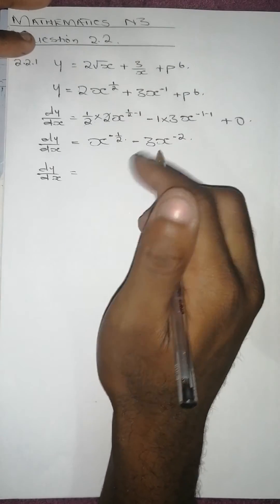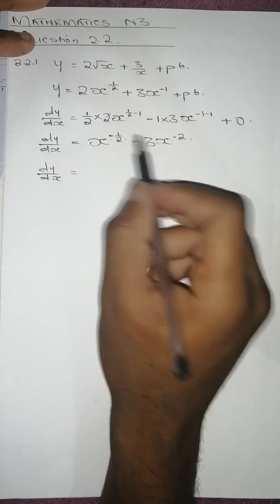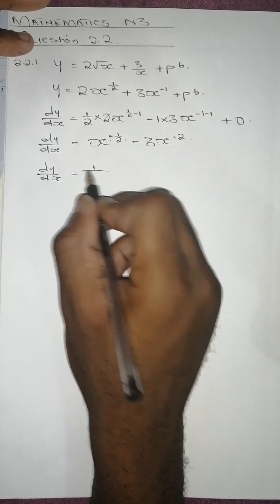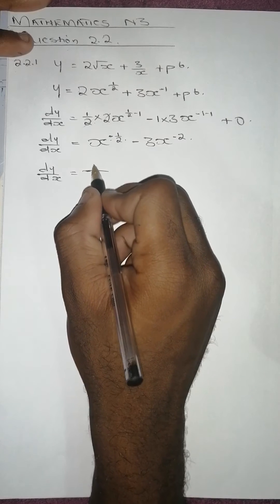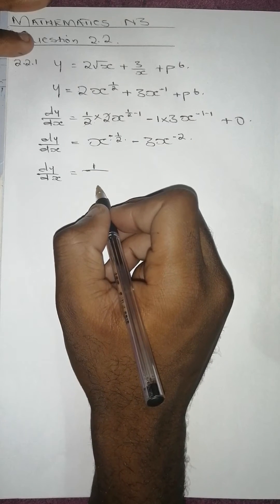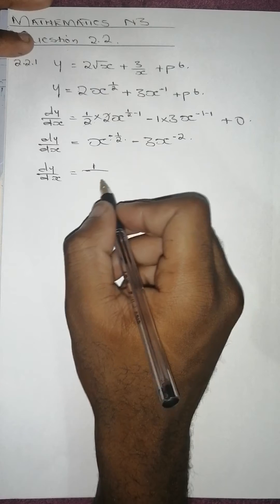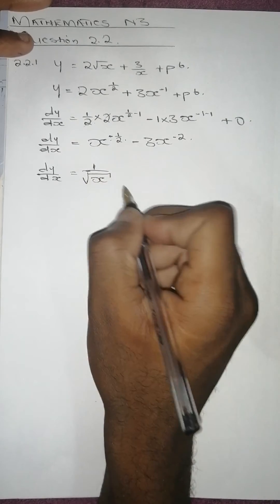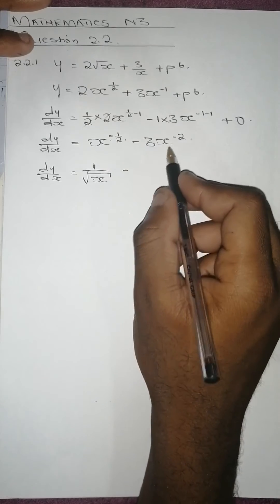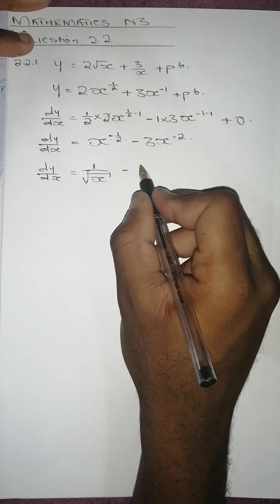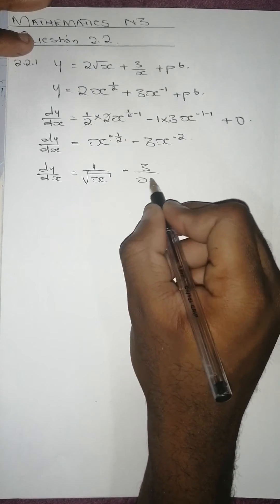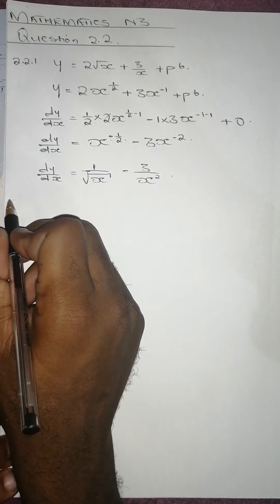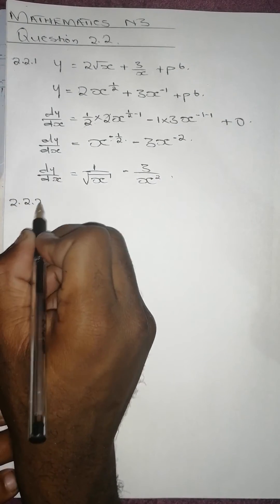Since the question says to leave the answer with positive exponents, we convert: x^(-1/2) becomes 1 over x^(1/2), and since x^(1/2) is simply the square root, the answer is dy/dx = 1/√x - 3/x².